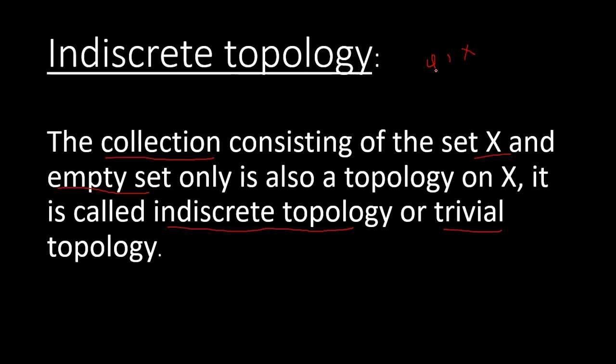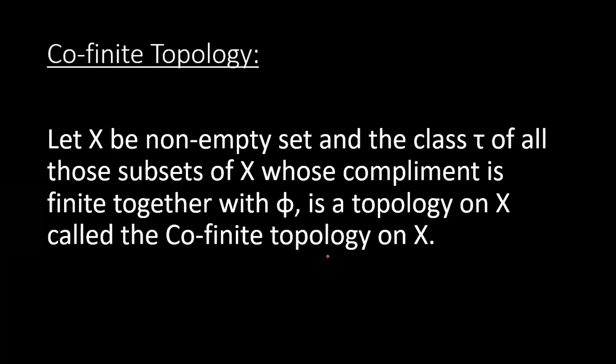You can see that if we take the union, the first axiom is already satisfied because φ and X are in τ. The union of these two will be equal to X, and their intersection equals φ. That's all about indiscrete topology.